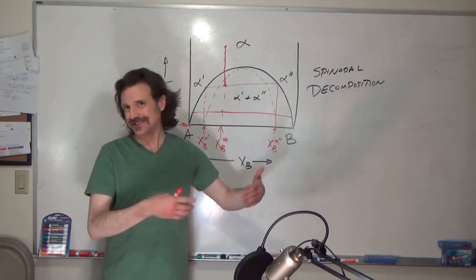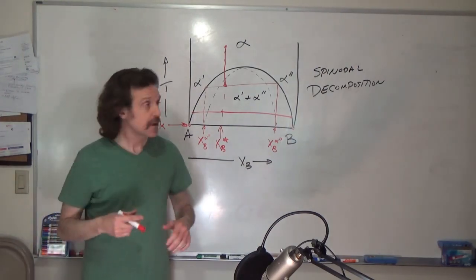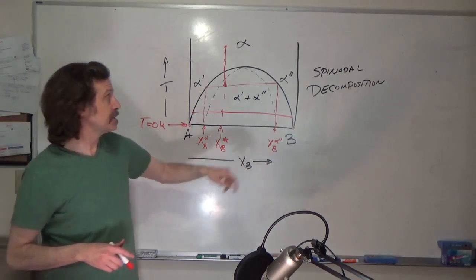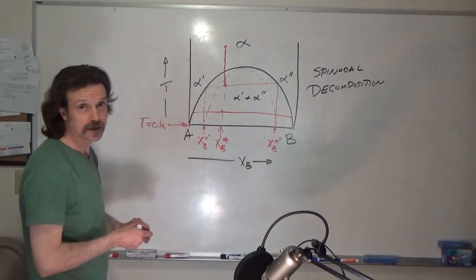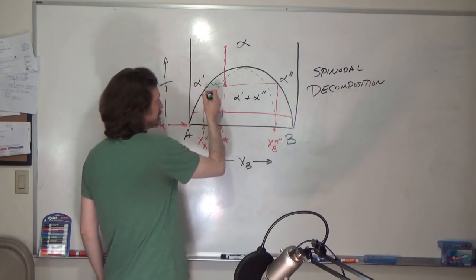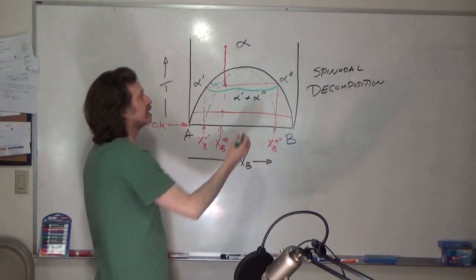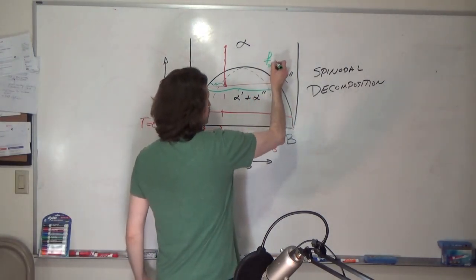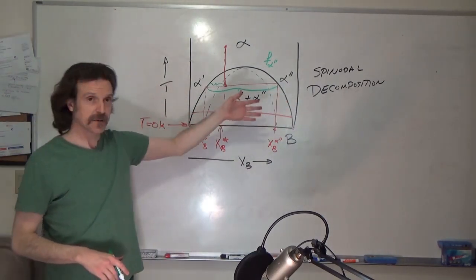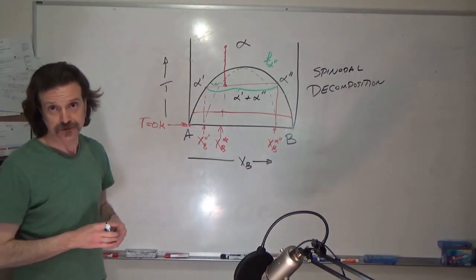Do remember you're looking at these solid lines to define the composition of your alpha prime and alpha double prime, and you are using your inverse lever rule—for example, this divided by this—to determine the fraction of alpha double prime. So everything we learned about reading binary phase diagrams, nothing changes, just the diagram gets a little stranger here.